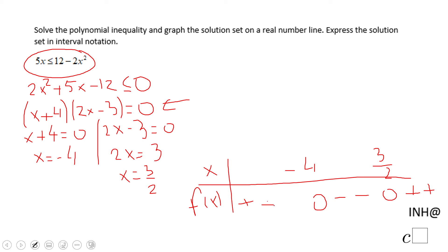So now we can answer our problem. We need to find the interval for which this polynomial inequality is less than or equal to zero. That will be right here between -4 and 3/2. You see I put the brackets in this case because we have the equals involved in this inequality.